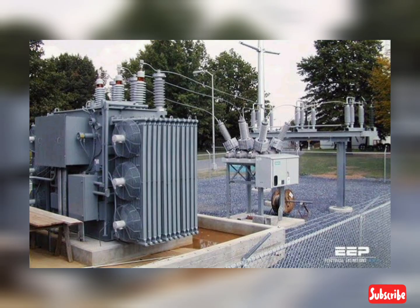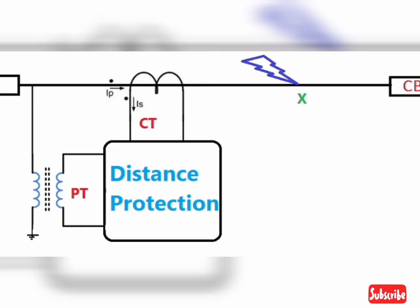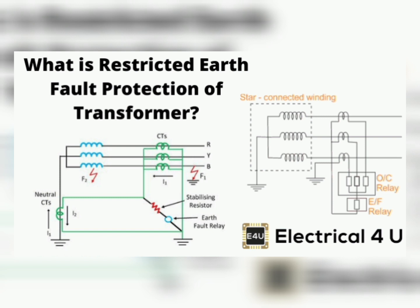Oil level and temperature protection monitors the oil level and temperature of the transformer; if the oil level is low or the temperature is too high, the circuit breaker will trip. Distance protection uses a relay that compares the impedance of the faulted section to the impedance of the healthy sections, tripping the breaker if the impedance is within the protection zone. Restricted earth fault protection uses a specialized relay to detect earth faults in the transformer winding where the current is restricted, allowing the faulted section to be located more accurately and quickly.